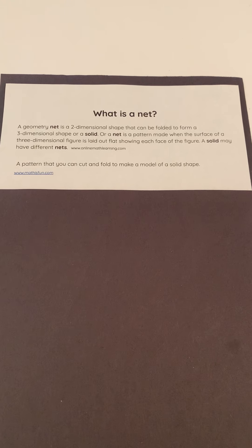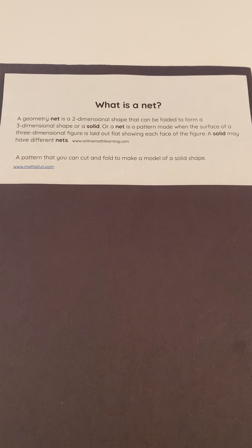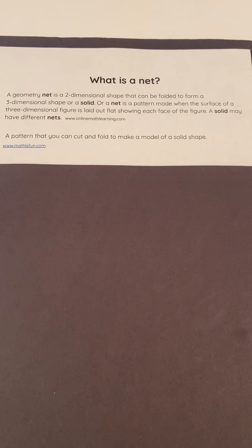This video will focus on what is a net. We will also look at different types of nets to determine what shape they can make, or whether they can make a three-dimensional shape or not. The mathematical term is a geometry net — a two-dimensional shape that can be folded to form a three-dimensional shape or solid. A net is also a pattern made when the surface of a three-dimensional figure is laid out flat, showing each face of the figure. A solid may have different nets.